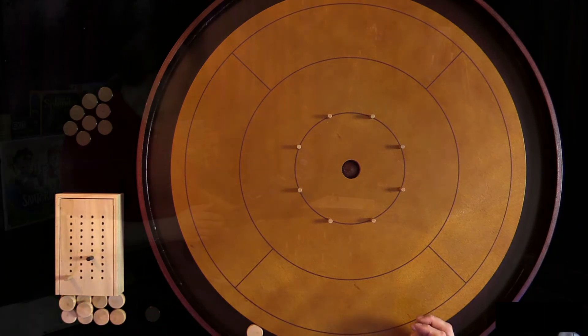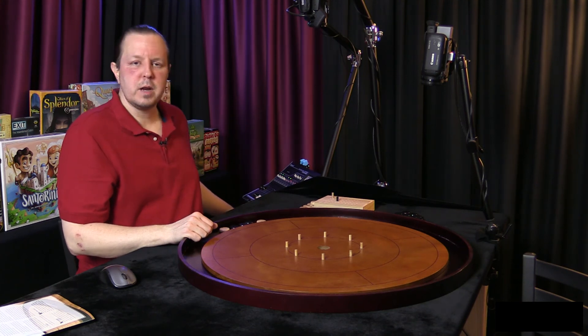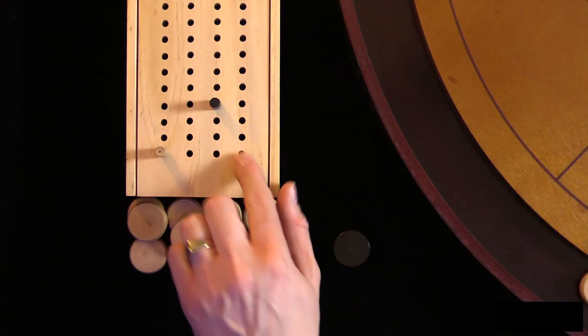The players will now switch who goes first. So if I went first, Julie would go, and then we would play as many rounds as it takes until one person gets 100.